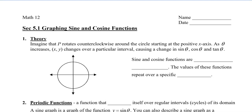In this video, I'm going to show you how to graph the basic sine and cosine functions. Let's say that we start with a point P here on the x-axis, and then P rotates counterclockwise around the circle. As theta increases, because P is changing, the x and y will also change over the particular interval. This will cause a change in sine theta, cosine theta, and also tan theta.